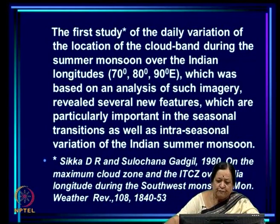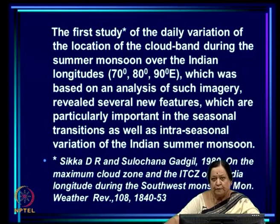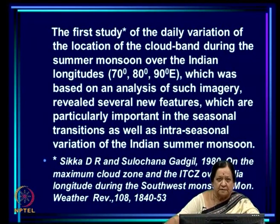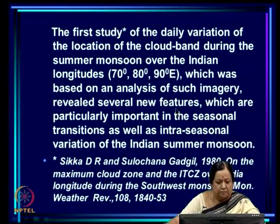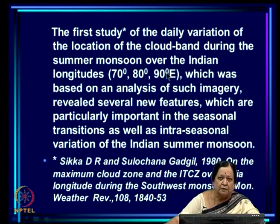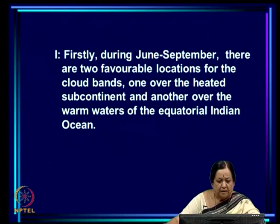The very first study of how these clouds vary from day to day, based on satellite imagery, reveals several new features particularly important in both the seasonal transitions — such as the onset phase and retreat phase — as well as fluctuations between active spells and breaks within the season. This study was carried out by eminent monsoon meteorologist Sikha Gadgil and myself, and the paper was published in 1980. It revealed many new features that were unanticipated.